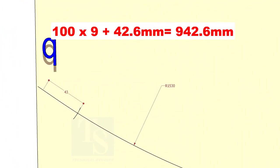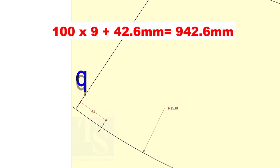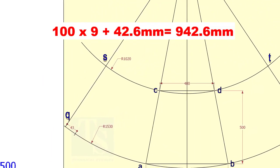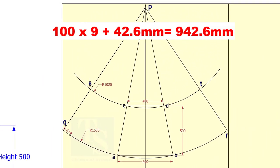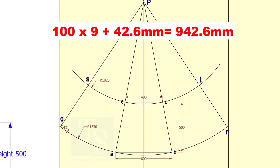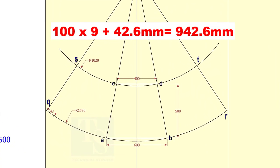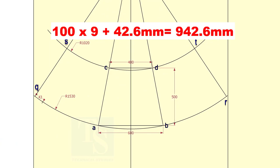Add the 42.6 millimeters at the end of 900 millimeters on both sides of the center line. Draw lines connecting this point to P.